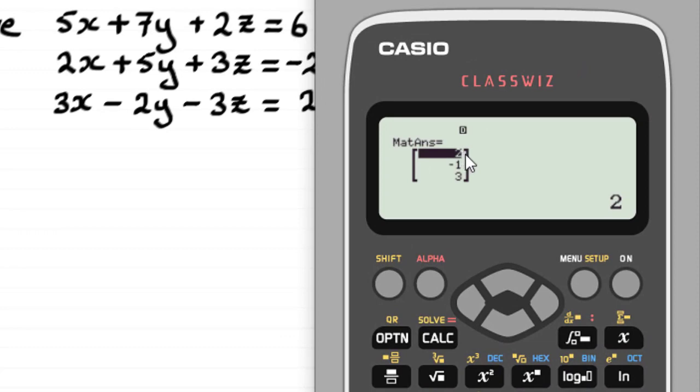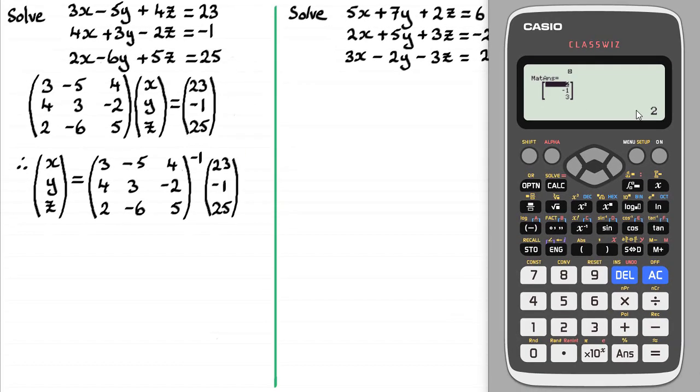This matrix here, 2, -1, 3. So it's saying 2 because it's highlighting the first element. Well, we can write that in. If we use the calculator then, we've got this matrix here, 2, -1, 3. And it's telling us that x is 2, y is -1, and z is 3. So I can put that in there. That's our summary of results.